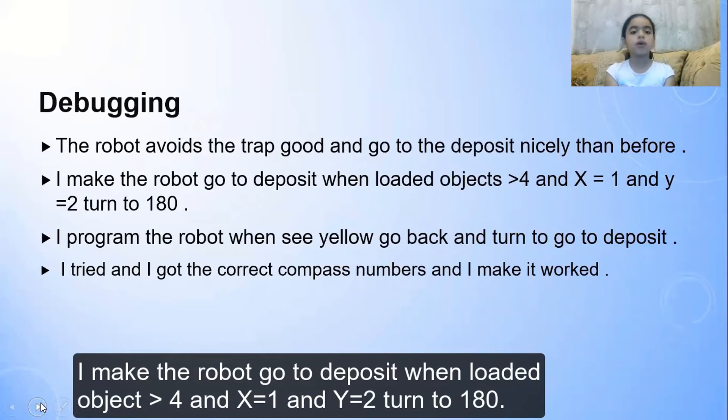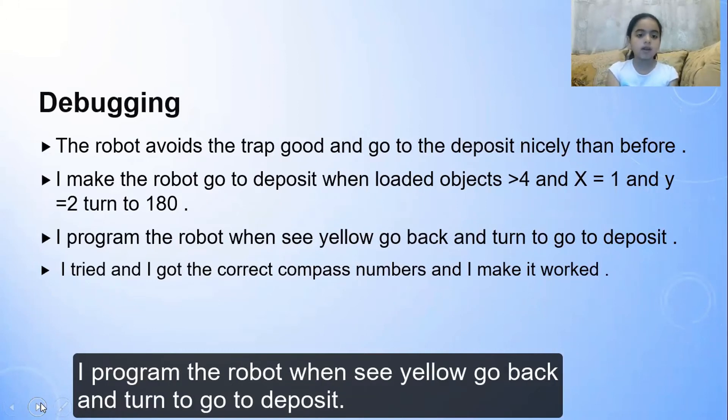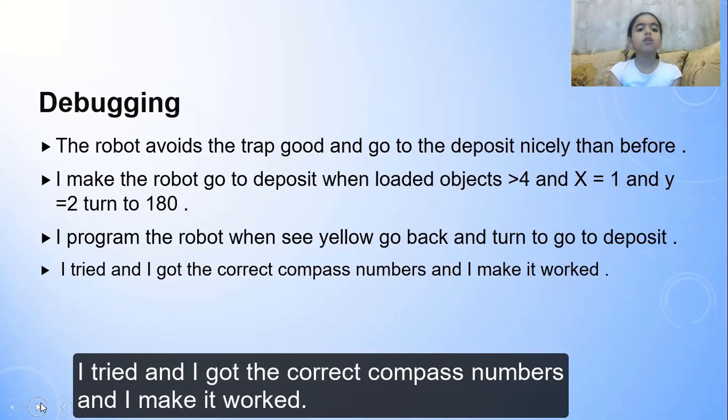I made the robot go to deposit loaded object more than 4 and X equals 1 and Y equals 2, turn to 180. I programmed the robot to see yellow go back and turn to go to deposit. I tried and I got the correct compass number and I make it work.